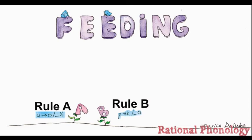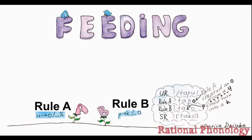As we see in this example, if we have an underlying form tapu, we have a PU string. Now, we don't have a chance of turning P into a K because it is before a U.